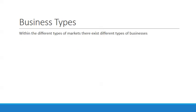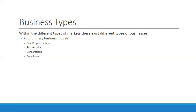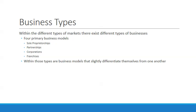So let's look at our business types. Within the different types of markets, there are just different types of businesses. We're going to have four primary models: a sole proprietorship, a partnership, a corporation, and a franchise. These are all things you're very familiar with. We just want to define them so we can differentiate how they work.